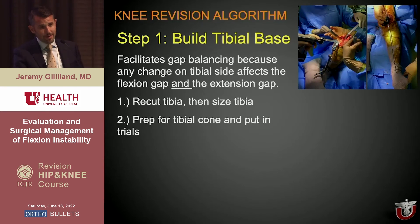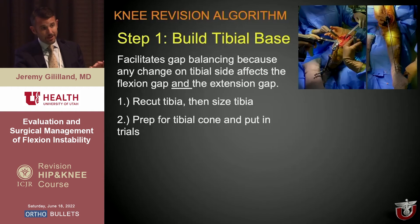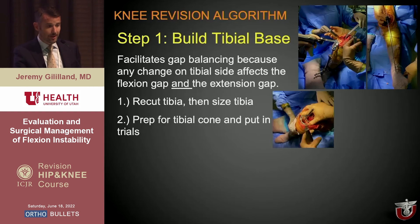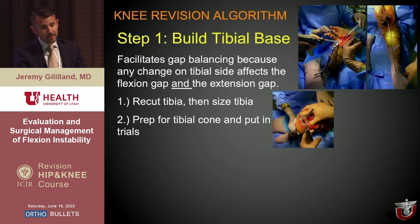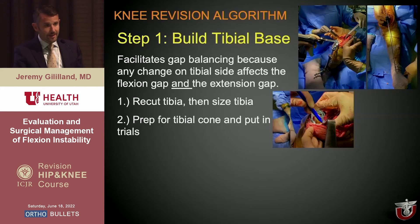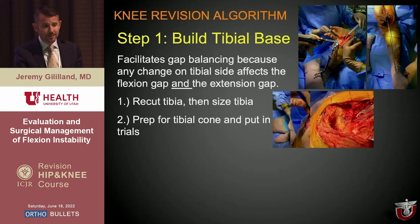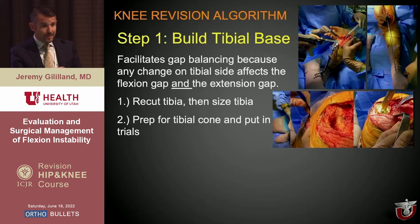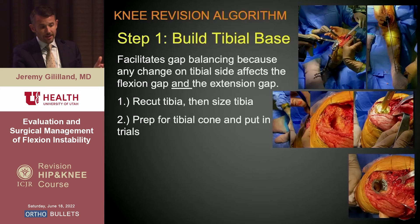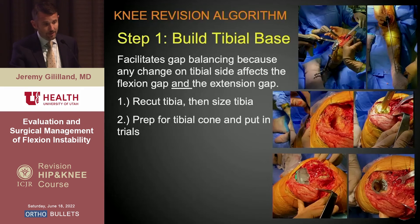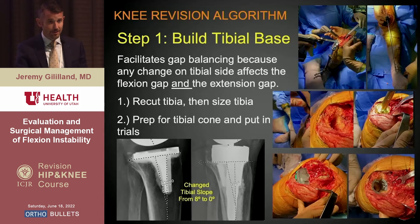I cut with my primary extramedullary guide — the same one I use every day for primaries, so I'm proficient with it. For revisions I cut just a couple of millimeters, making sure to cut at zero degrees of slope for this patient. I use a regular block and drop rod to check alignment, then lay the tibial lollipop on top to size and position the component, mark the center for the cone with a marker, ream centered on that mark, float the cone into position, place the cone trial and tibial trial. In this case, I changed slope from eight degrees to zero degrees to help with her balance.